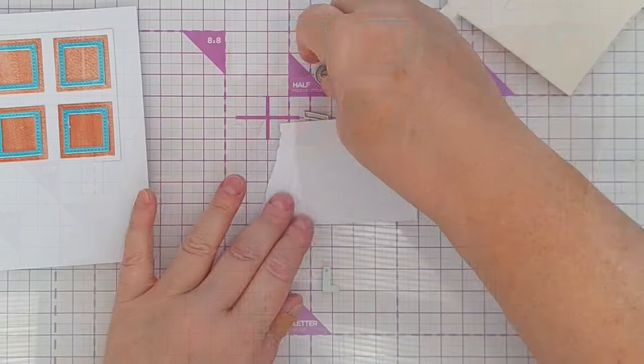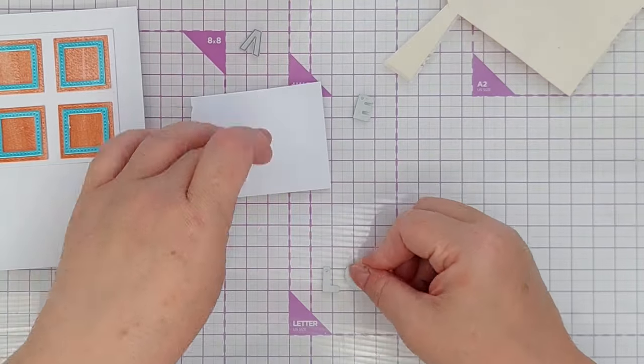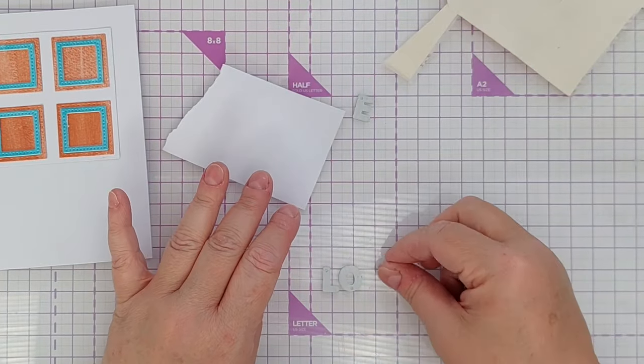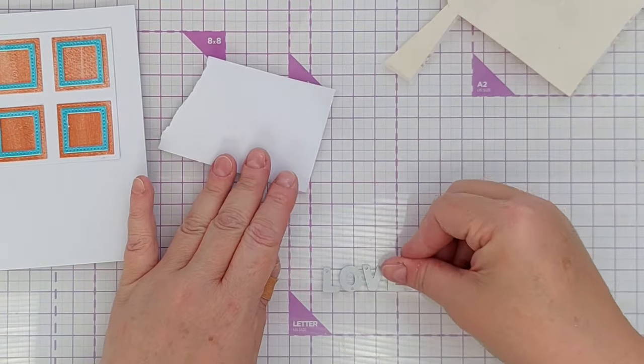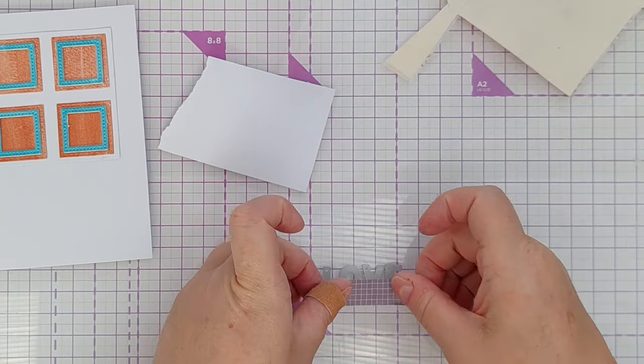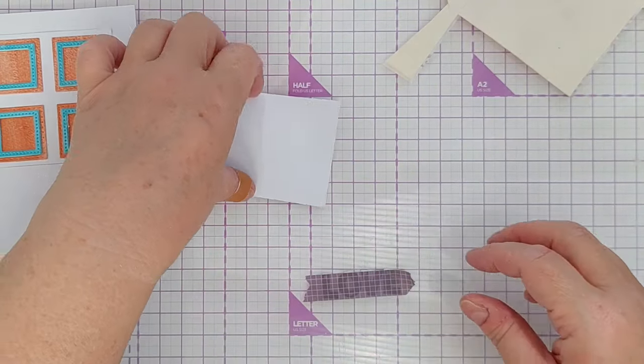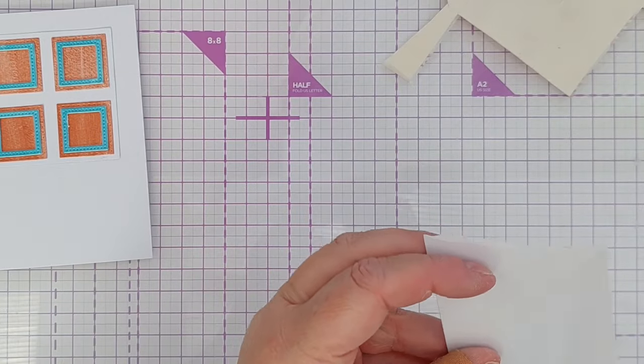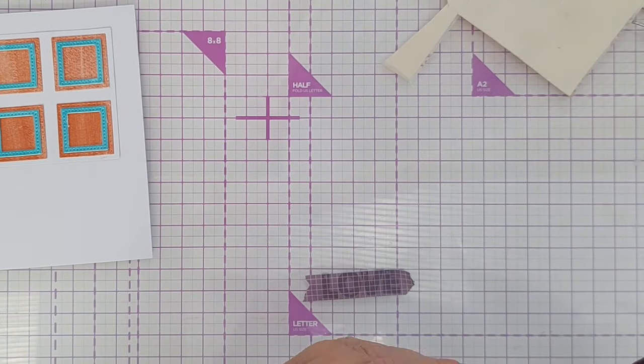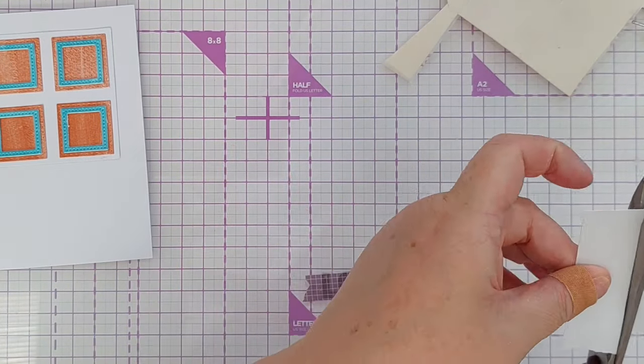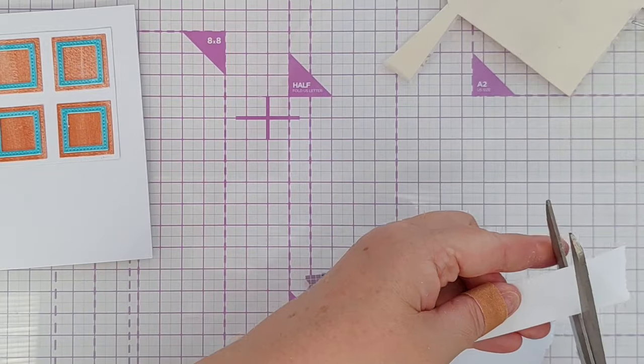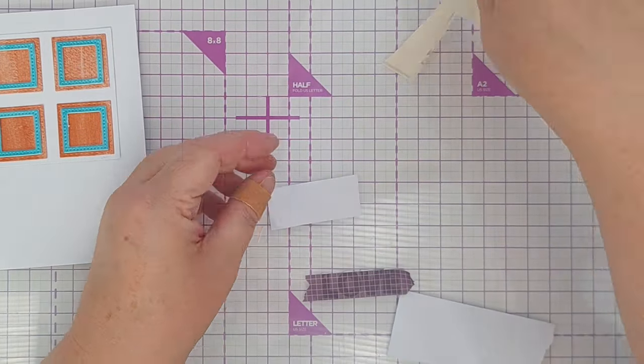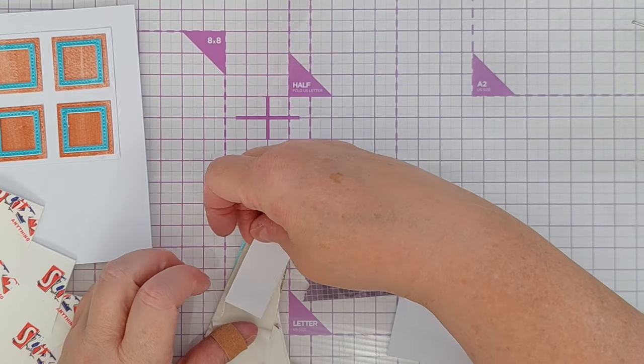So I put that to one side for a minute and decided to add a sentiment. I thought I could maybe stamp something on a long strip and stick it over some of the squares or stamp underneath the squares or stamp between the squares but in the end I decided to die cut out some white letters that spell out the word love and put one in each square.